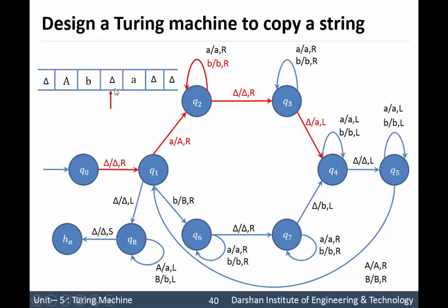Move to the left direction. In left direction we have delta, so delta is replaced by delta and move to the left direction. Keep moving to the left direction until we encounter our first capital symbol. So 'b' will be replaced with 'b' and move to the left direction. Now in the left direction we have our capital 'A'. Whenever we encounter our capital symbol, that means now it's time to move to the right direction. So 'A' will be replaced by 'A' and move to the right direction. Using this cycle we can paste our single symbol onto the tape. Now the head pointer is pointing to 'b', so convert this small 'b' into capital 'B' and move to the right direction.